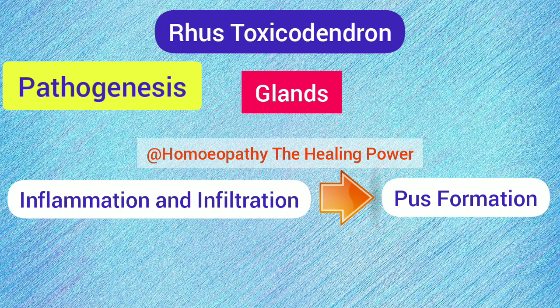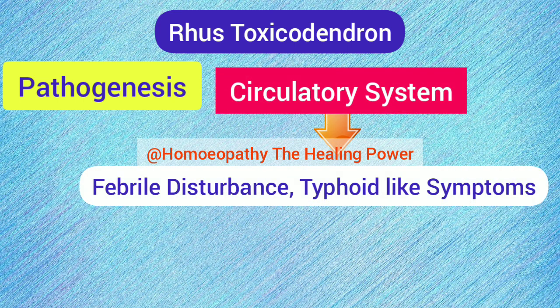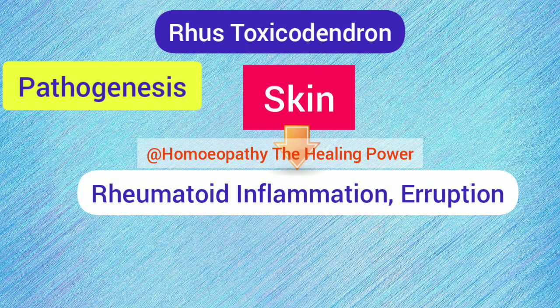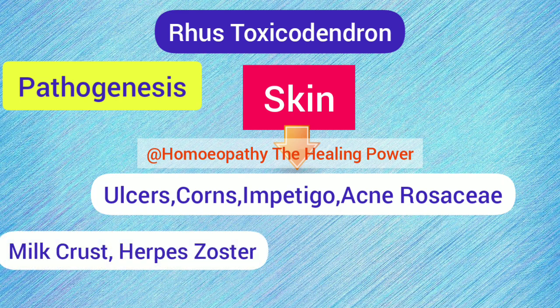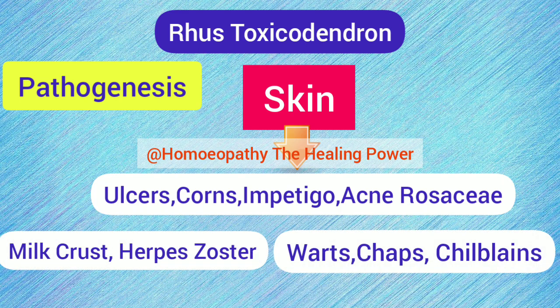By acting on the circulatory system, Rhus Tox produces febrile disturbances, typhoid-like symptoms, and different types of fevers like intermittent fever. Rhus Tox also has remarkable action on skin, producing rheumatoid inflammation, eruptions, burning sensation, and itching. It produces all types of skin complaints like ulcers, impetigo, acne rosacea, milk crust, herpes zoster, warts, chilblains, and many more.